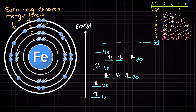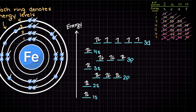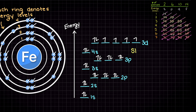Then we have another p orbital, which can again take 6 electrons, followed by our 4s orbital, which can again take 2. Now we have our first d orbital, which can hold 10 electrons. We have 6 electrons left to place, so let's recall that we place one electron into their own orbital before pairing them up. Therefore we will get an electron configuration that looks like this.